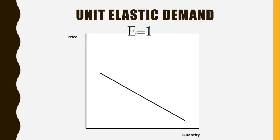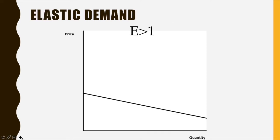If you get an elasticity value equal to one, the demand curve is at approximately a 45-degree angle. This is called unit elastic demand — the exact same percent change in price produces the exact same percent change in quantity demanded. If elasticity is greater than one but less than infinity, demand is said to be elastic, where consumers are very responsive to price changes — small changes in price create relatively large changes in quantity demanded.